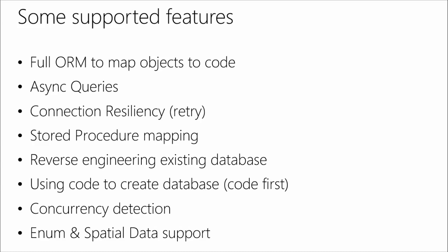Here are some supported features — by no means a complete list. Entity Framework is essentially a full-featured ORM that maps your database to your code and vice versa, from a customer table to a customer class. Table names and class names don't have to match. It now has full support for asynchronous queries, connection resiliency to retry on connection failures, stored procedure mapping, reverse engineering an existing database, using code to create a database, concurrency detection, and enum and spatial data support.